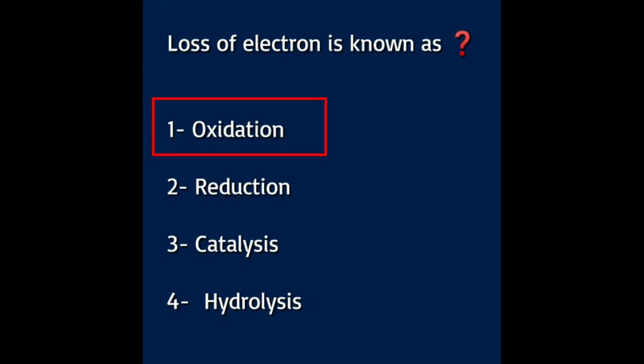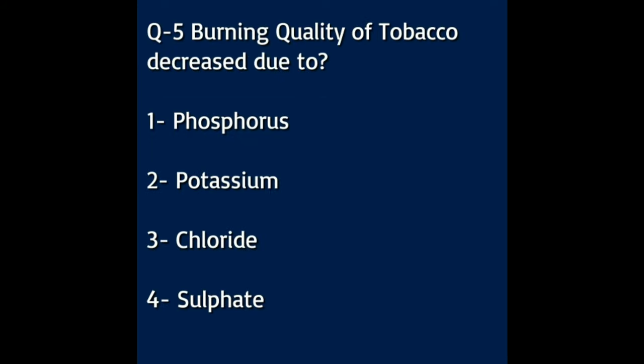Question number five: burning quality of tobacco is decreased due to — Option A: phosphorus. Option B: potassium. Option C: chloride. Option D: sulfate. The answer to this question is chloride.